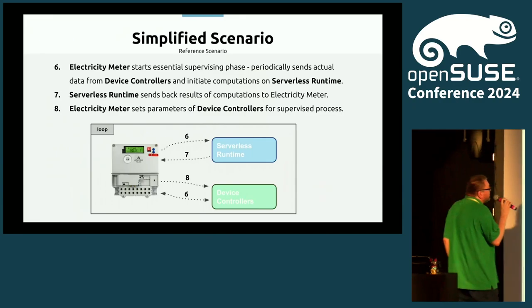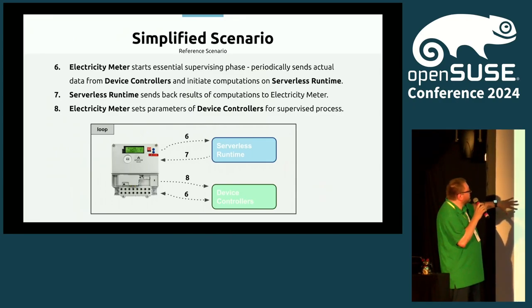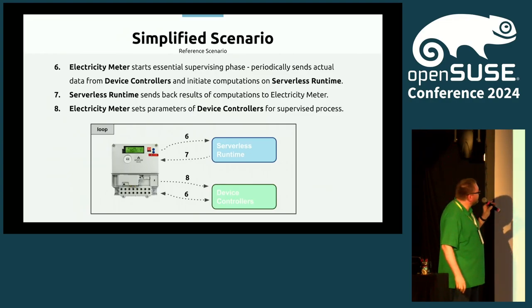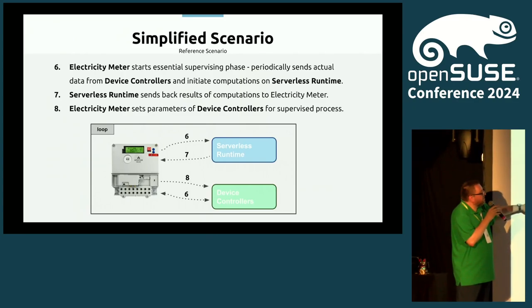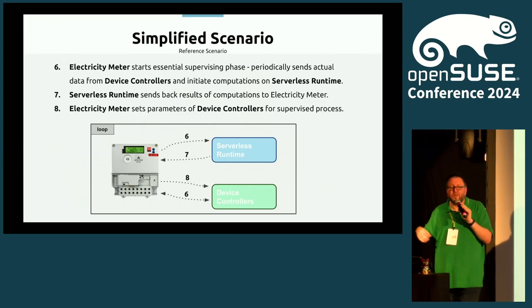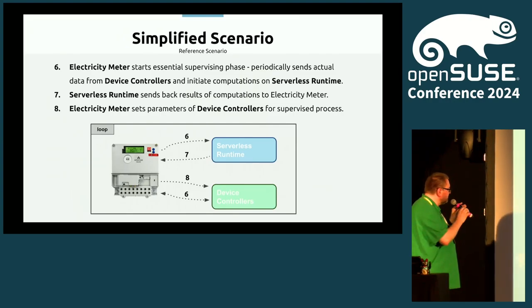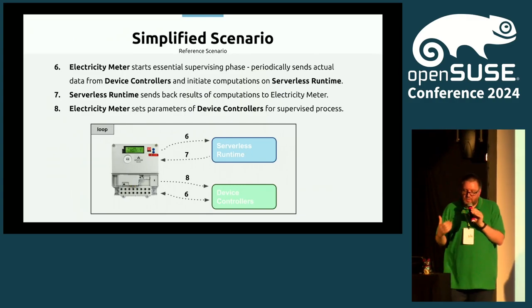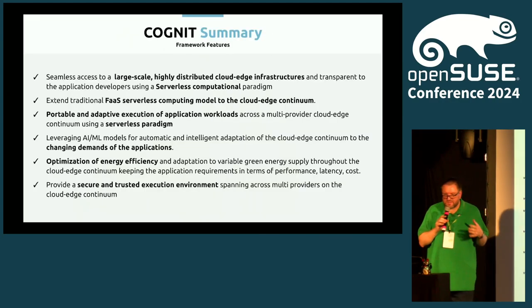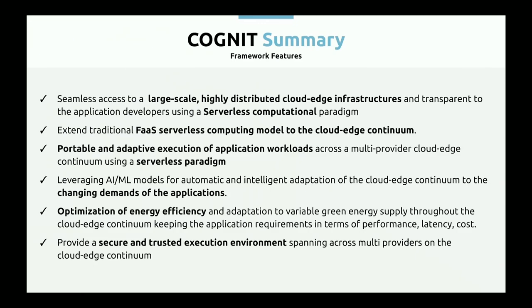It then runs periodically, exchanging data and receiving back results. If required, it sends instructions to devices in the home controlling the photovoltaic system or the EV charging station. As you can see, it's always about limited space and constraints on devices. The project's idea is really to balance local computation versus what you can offload — not to a central data center far away, but somewhere in the region where your devices are.